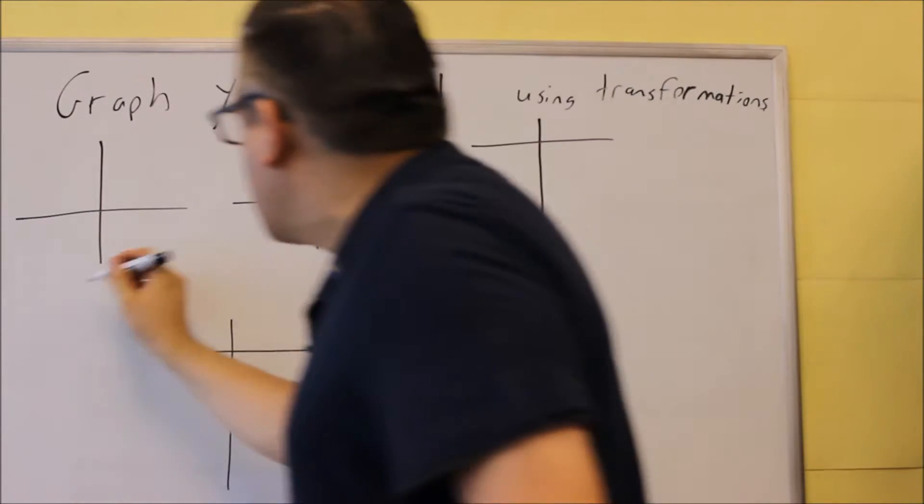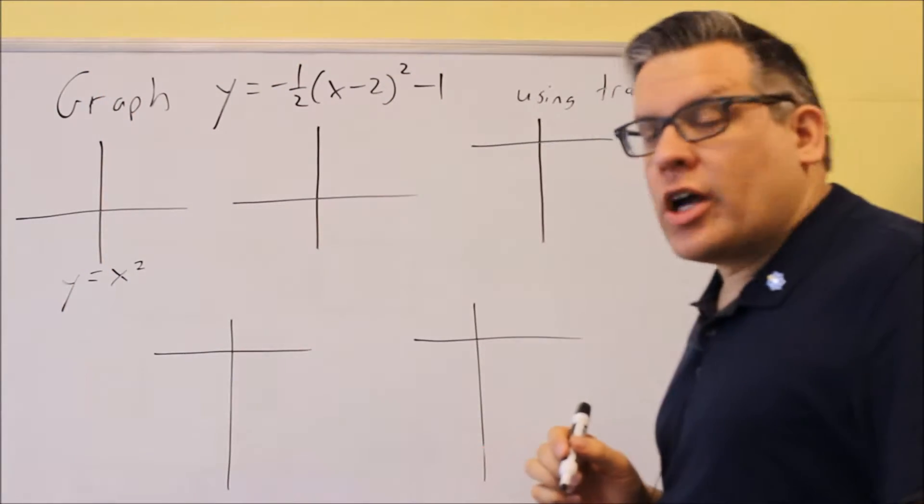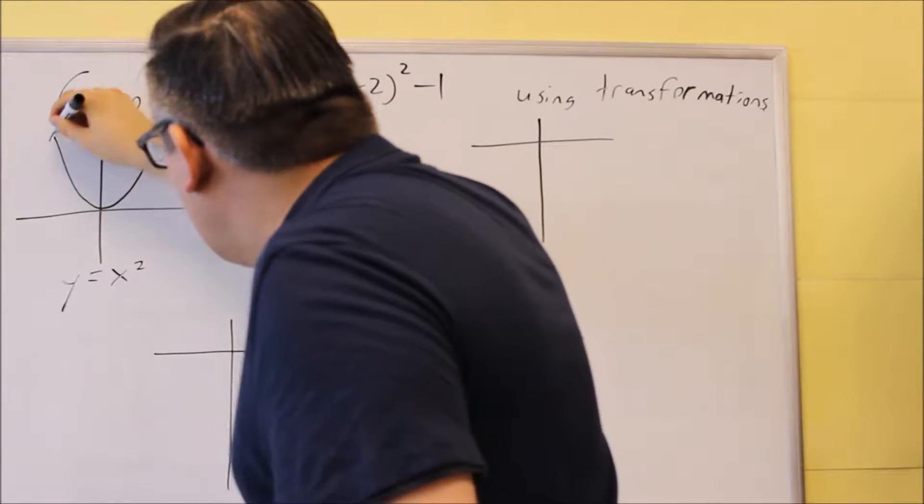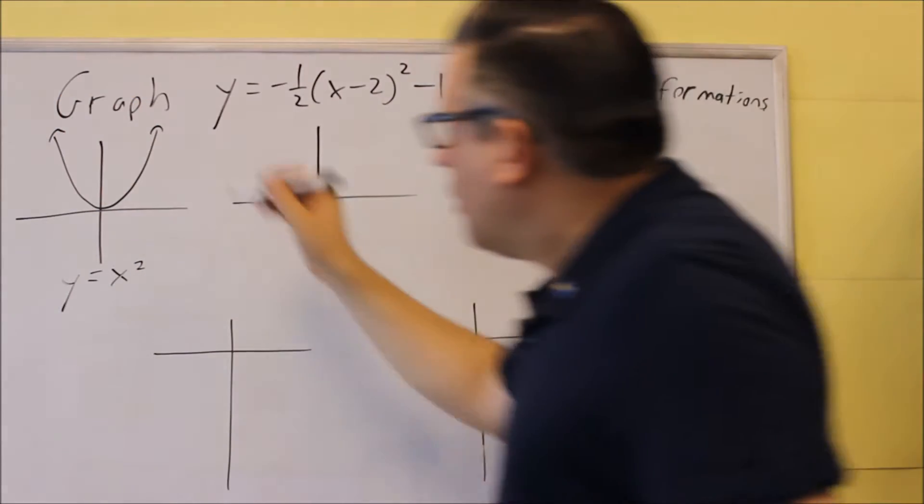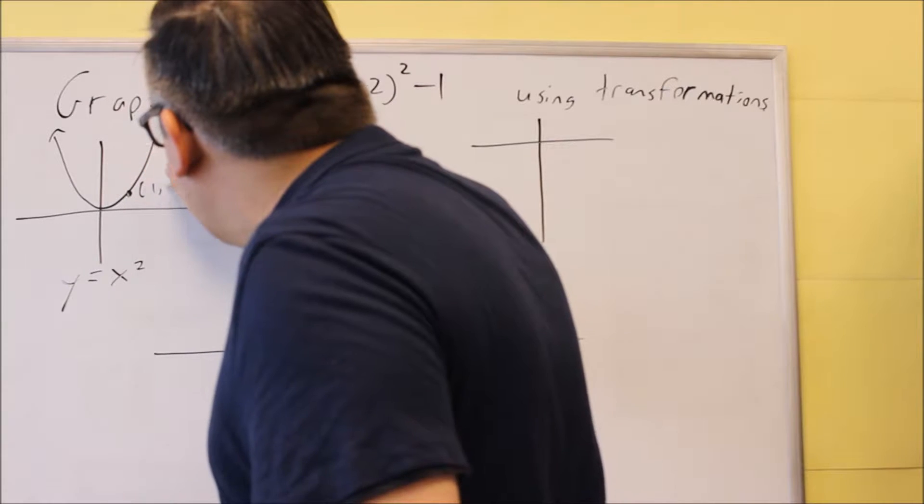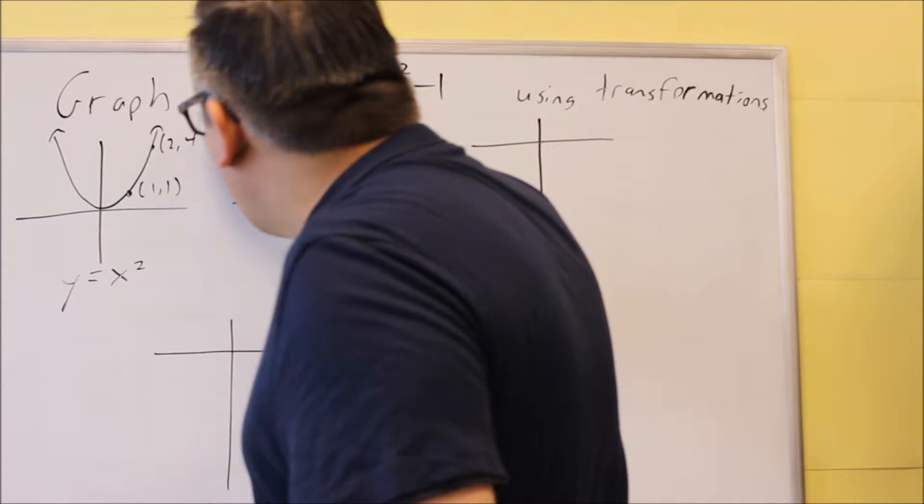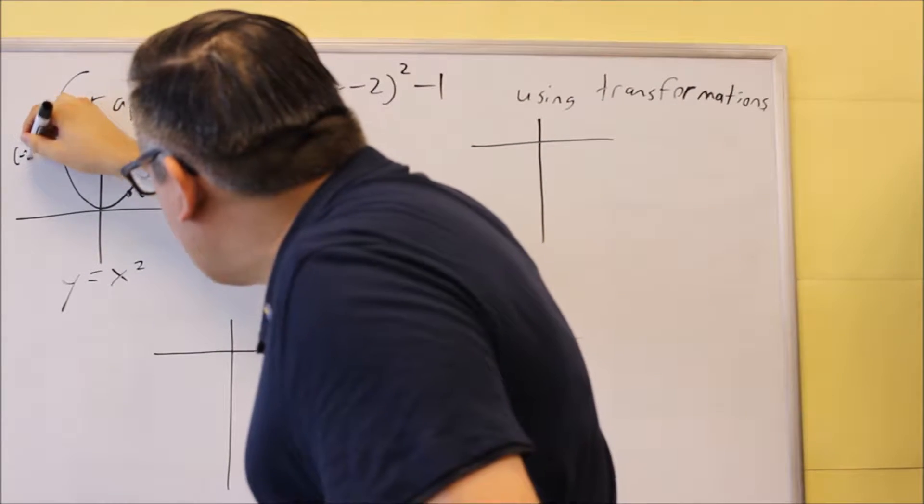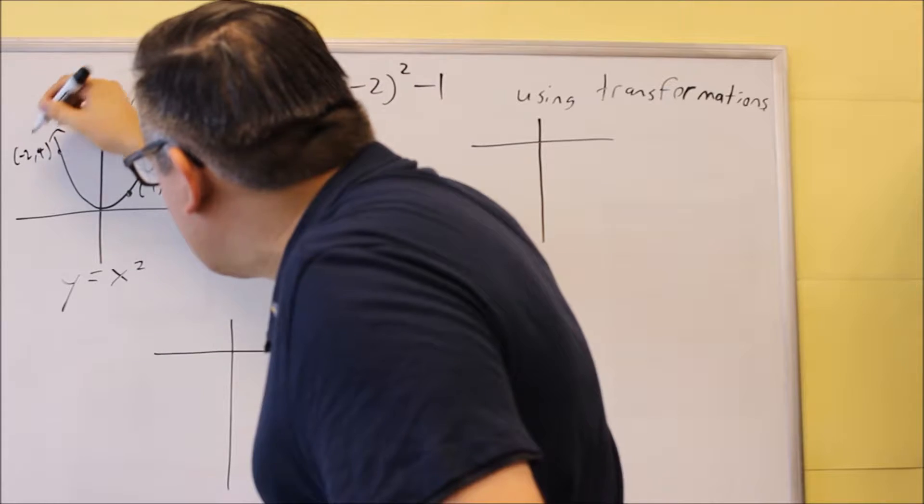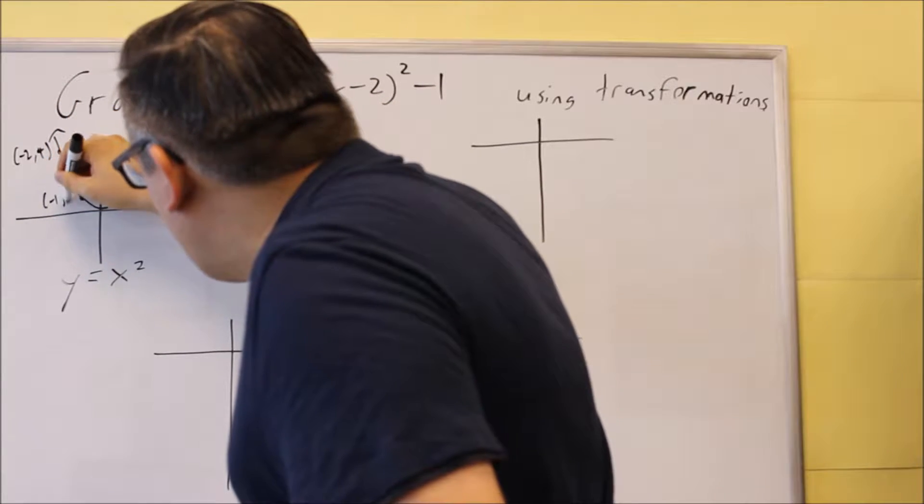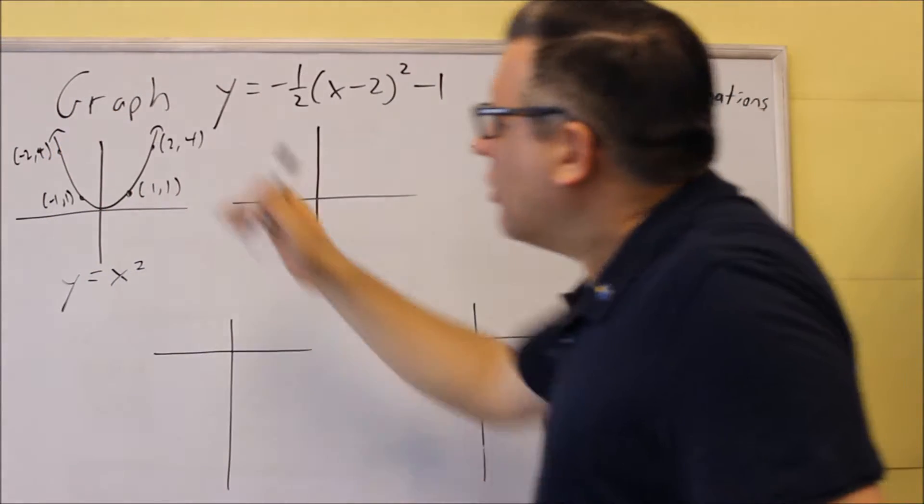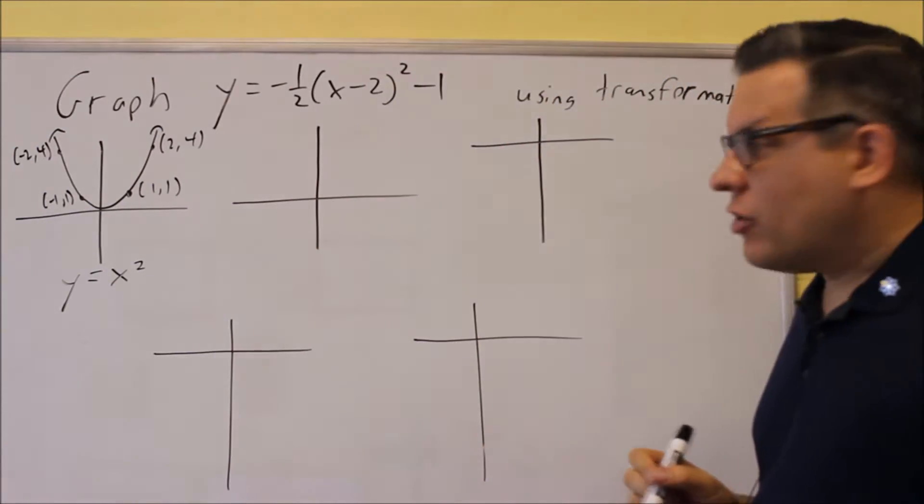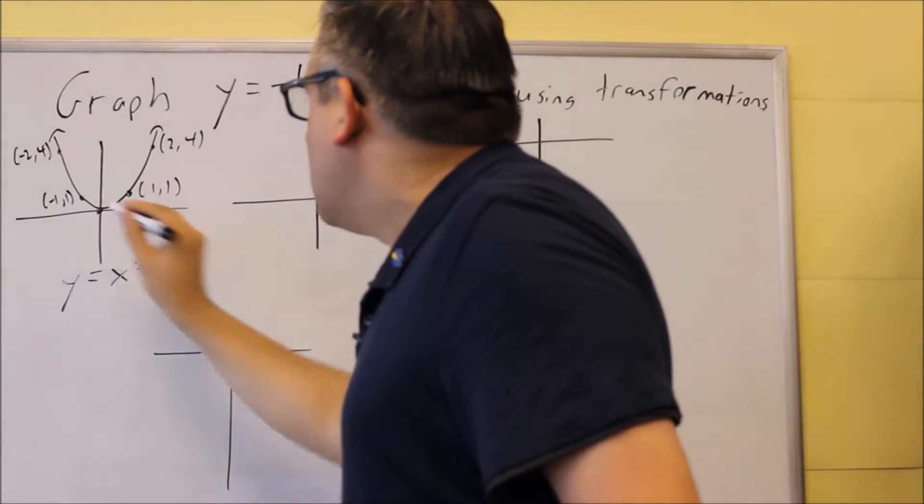So the first one I'm going to do is, you always begin with your base graph, so y equals x squared, and that's going to be our parabola that's going to look like this. We've got some key points here, and these all come from your library functions. We have (1, 1), we have (2, 4). I'll put the ones on this side also: (-2, 4) and (-1, 1). So that's going to be your original key points that we have on that one. Of course, it goes through also the (0, 0).